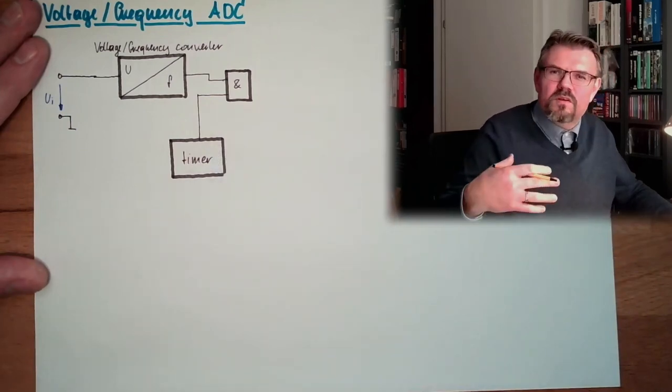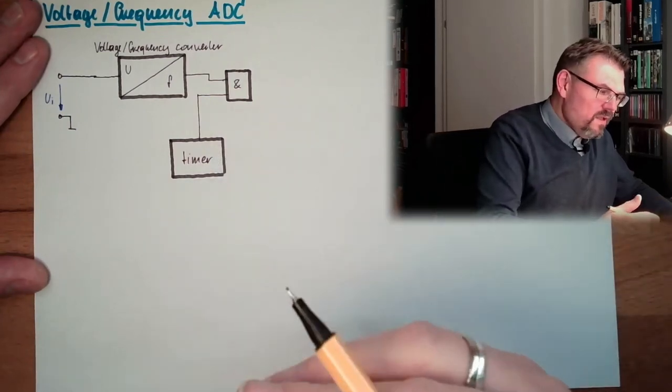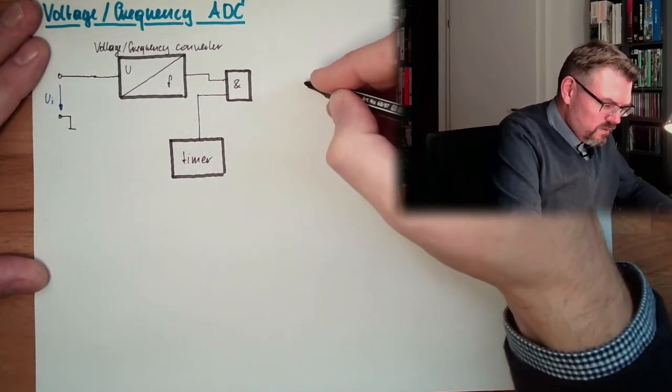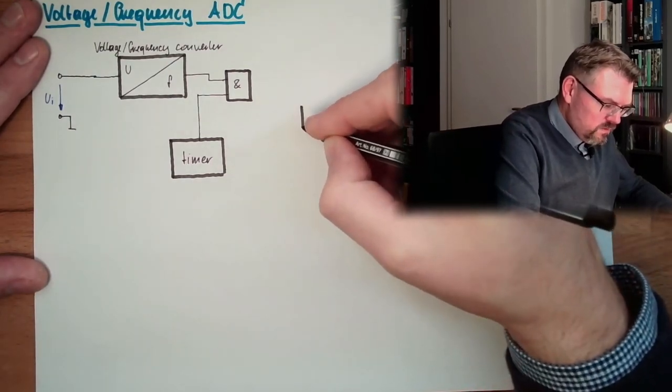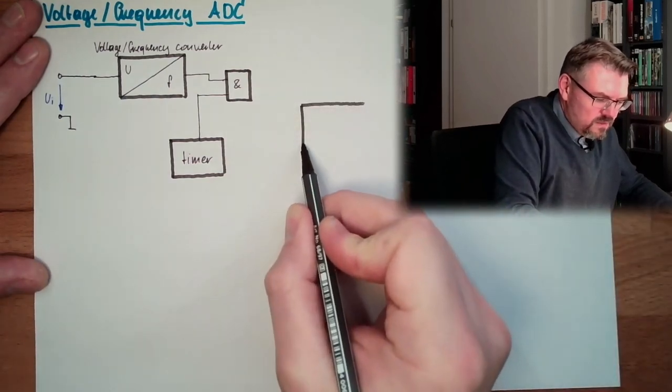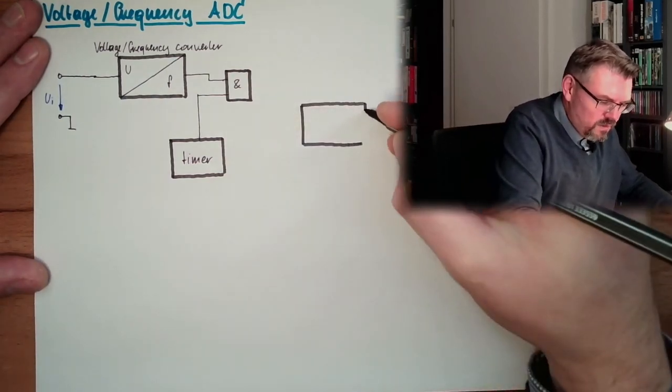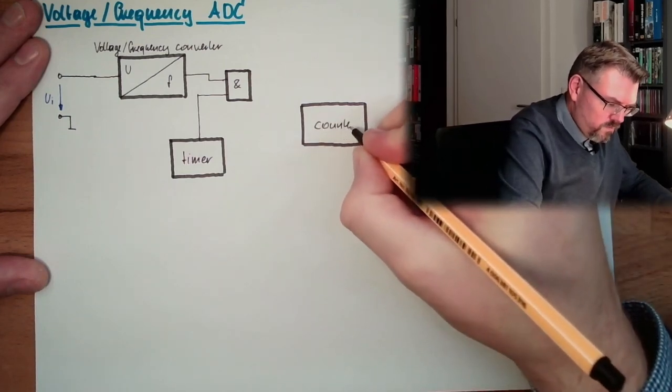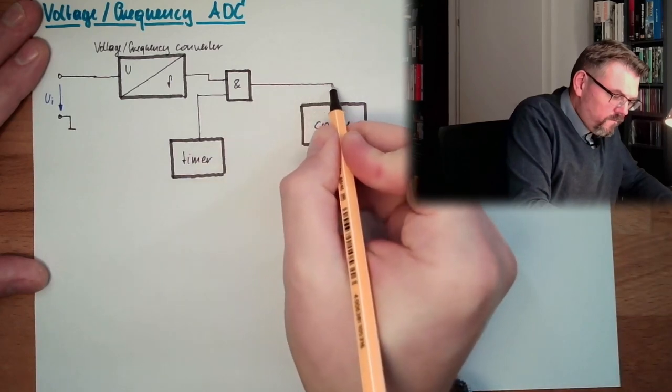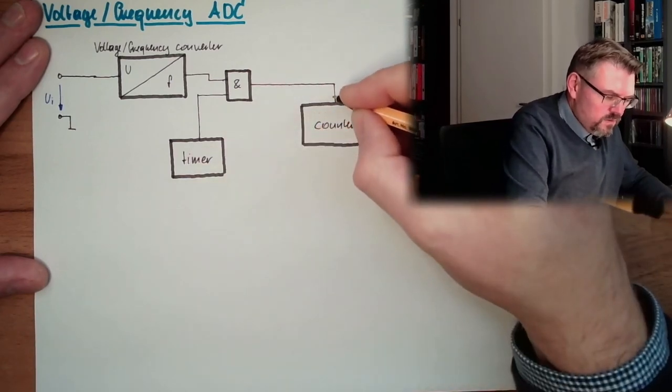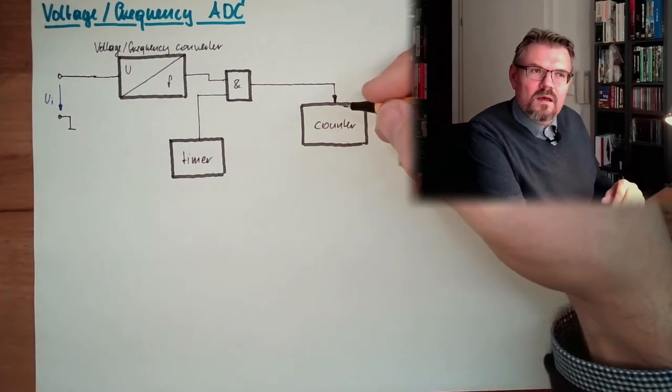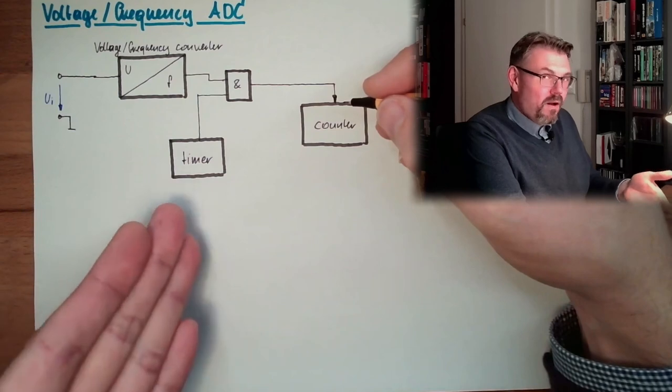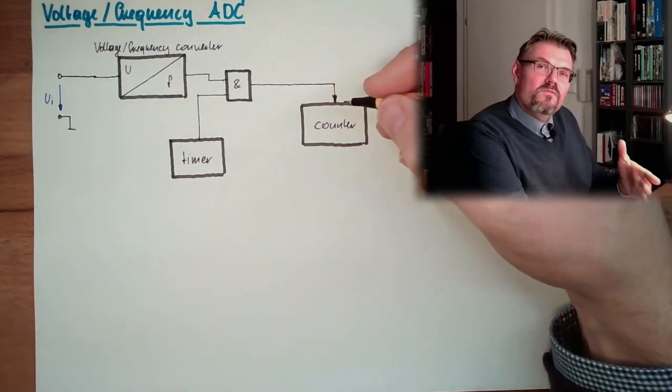The timer gives a certain time, and then the only thing missing is the counter. This time we're not counting a different amount of time - we're counting the same amount of time given by the timer, but with different frequencies.